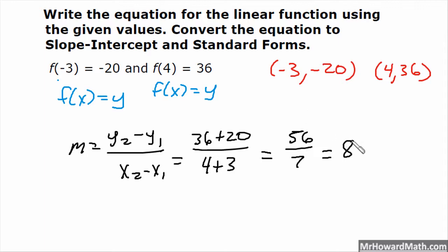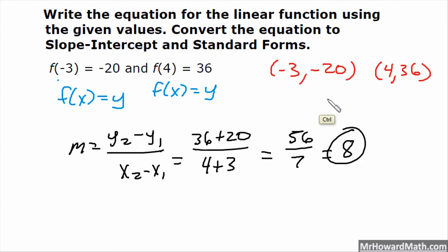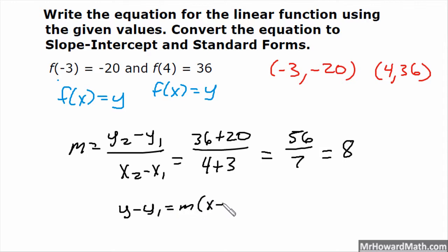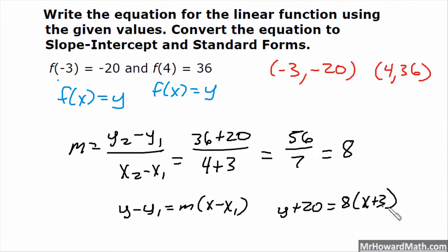Now that we have the slope and a point, we'll use this one — we could choose either one. We have a point and slope, so we'll write it in point-slope first. So point-slope: y minus y1 equals m times the quantity x minus x1. For our line, that would be y plus 20 equals 8 times the quantity x plus 3. That's using this point right here, so that would be our point-slope form.